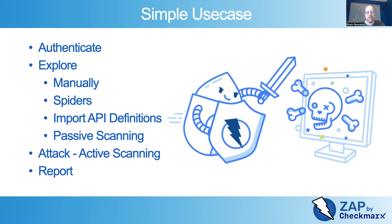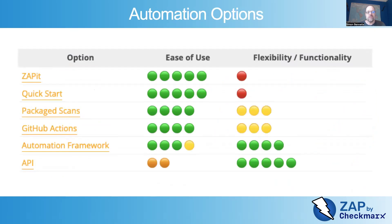You can generate an HTML or structured data report, or you can actually send these results to your bug tracker. Now automation is a key part of Zap and one of its strengths. We have a quick option called Zap It, which allows you to do a very quick test of the first URL in an application. That can actually tell you a lot of information about that application without doing any crawling or attacking.